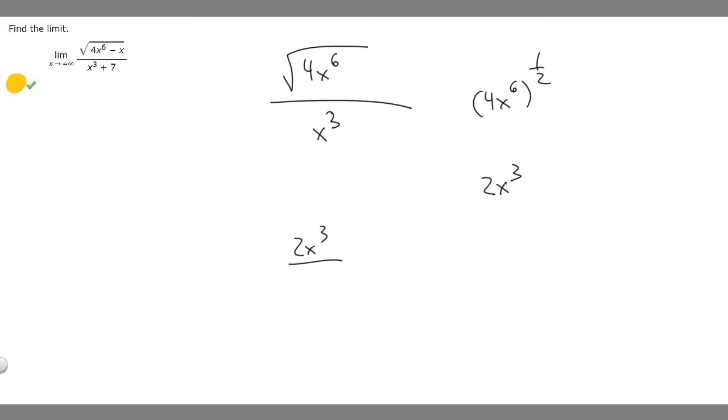We have 2x to the 3 over x cubed. Now what you want to do is look at these to the same degree. Both of these are to the 3. You're going to take a look at the coefficient out front and then divide them. So the bottom one's 1, we just don't see it. So it's 2 divided by 1, which equals 2.